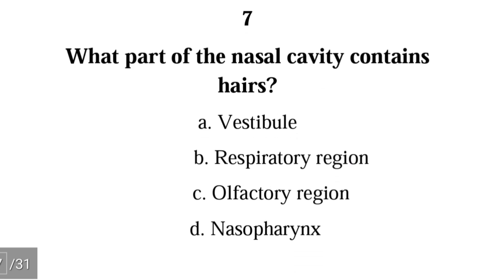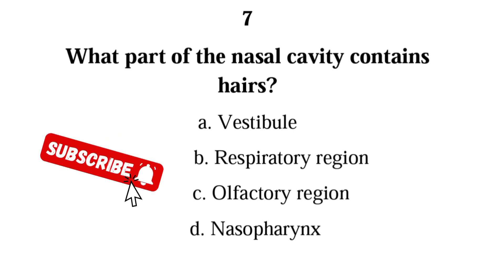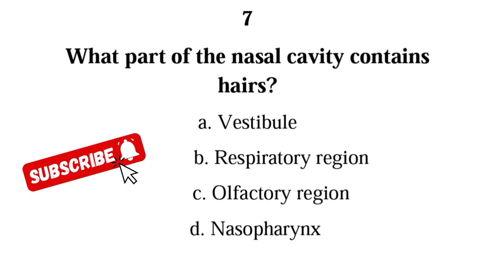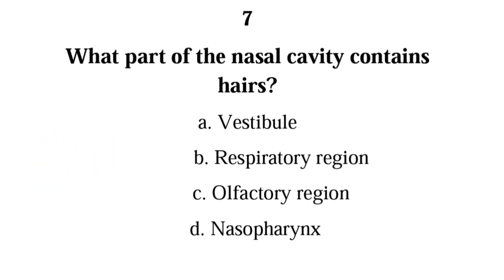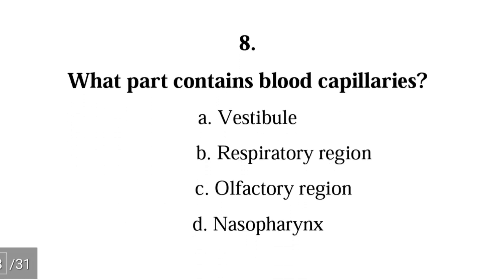Number 7. What part of the nasal cavity contains hairs? A. vestibule, B. respiratory region, C. olfactory region, D. nasopharynx. The correct answer is A, vestibule. The vestibule is the entrance of the nose and that is where you have hairs.